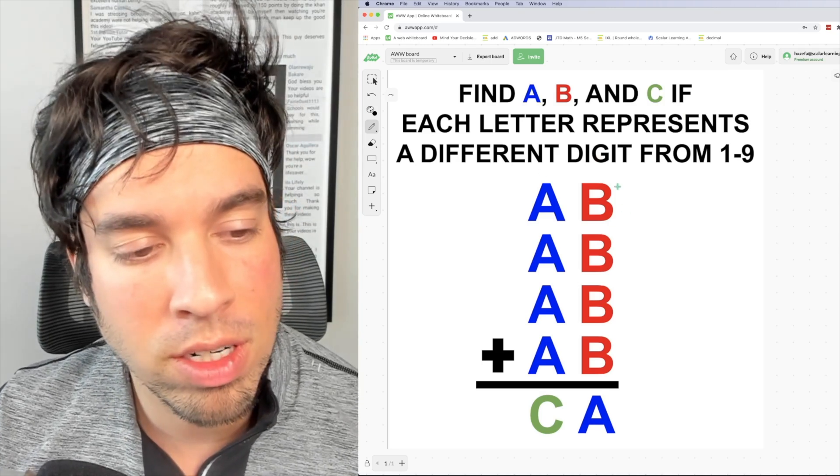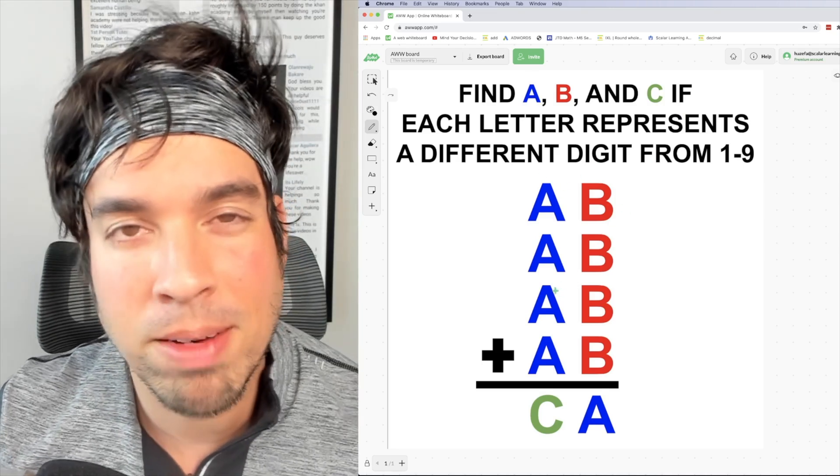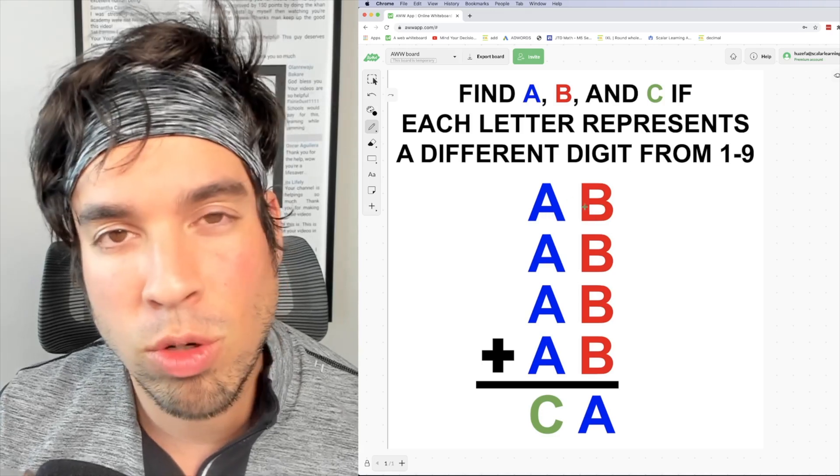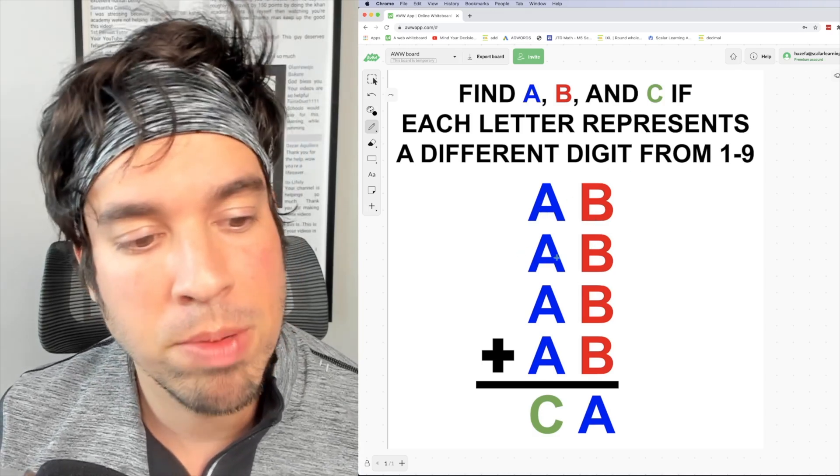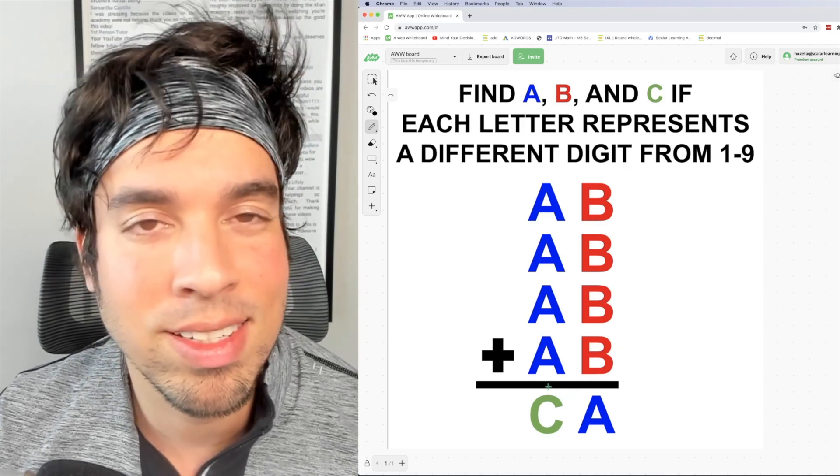And again what we've got here is an equation or a sum that it must satisfy where we've got these two digit numbers AB plus AB plus AB plus AB equals CA.